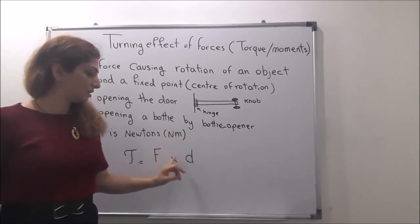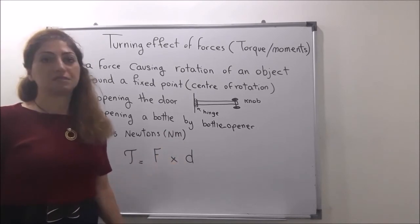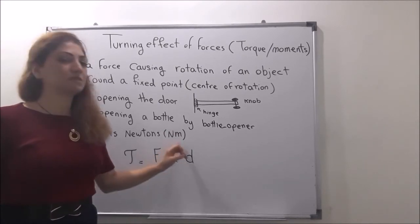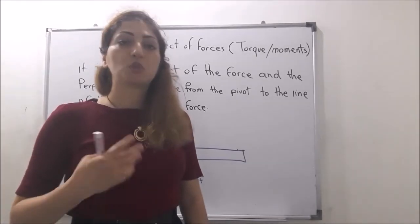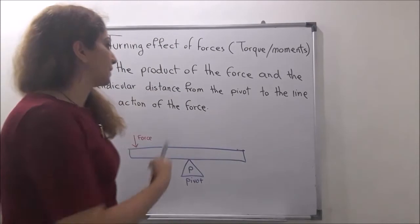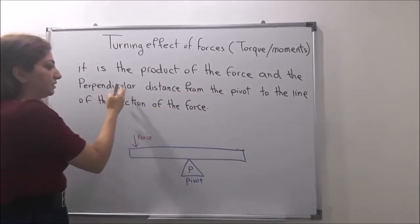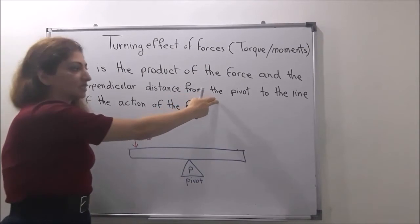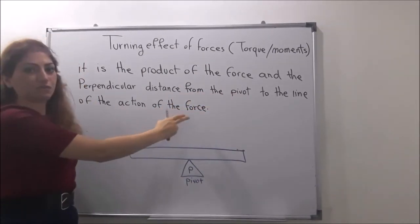The distance can be in meters, giving units of Newton-meters, or in centimeters, giving Newton-centimeters. Usually it is in Newton-meters. We can say that torque is the product of the force and the perpendicular distance from the pivot to the line of action of the force.